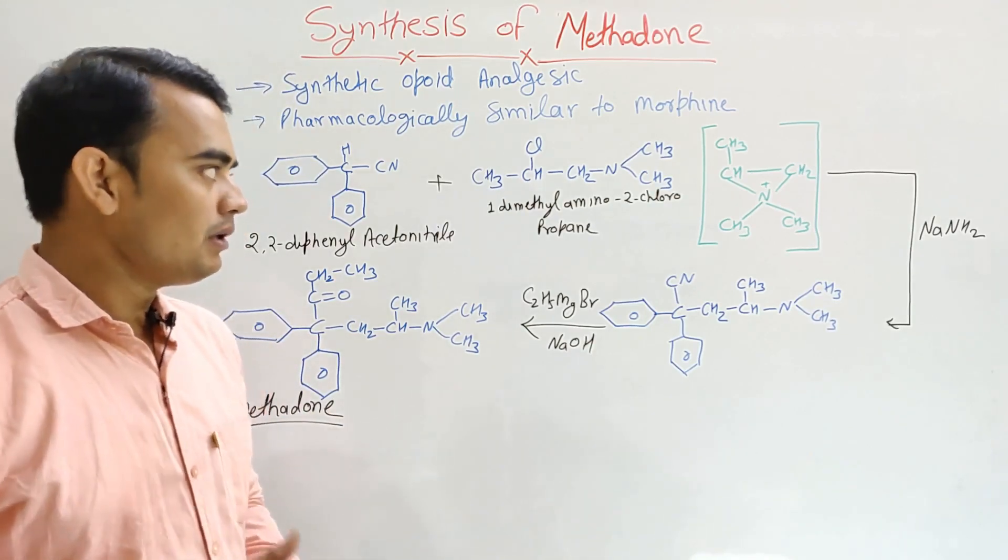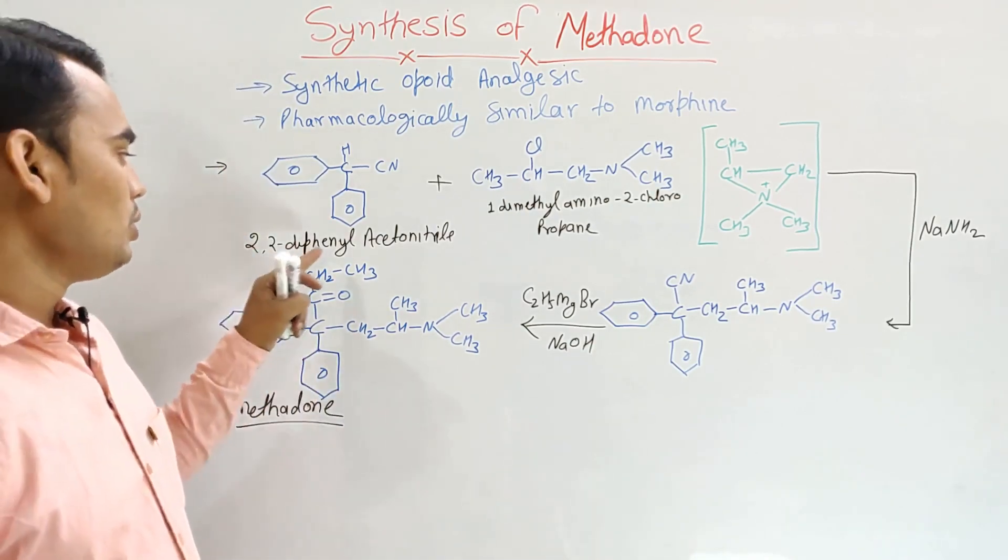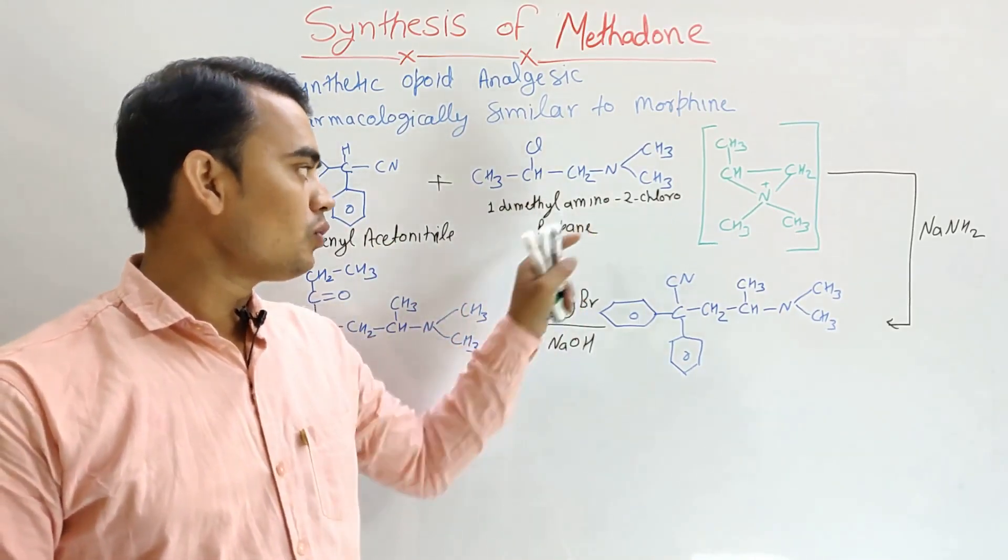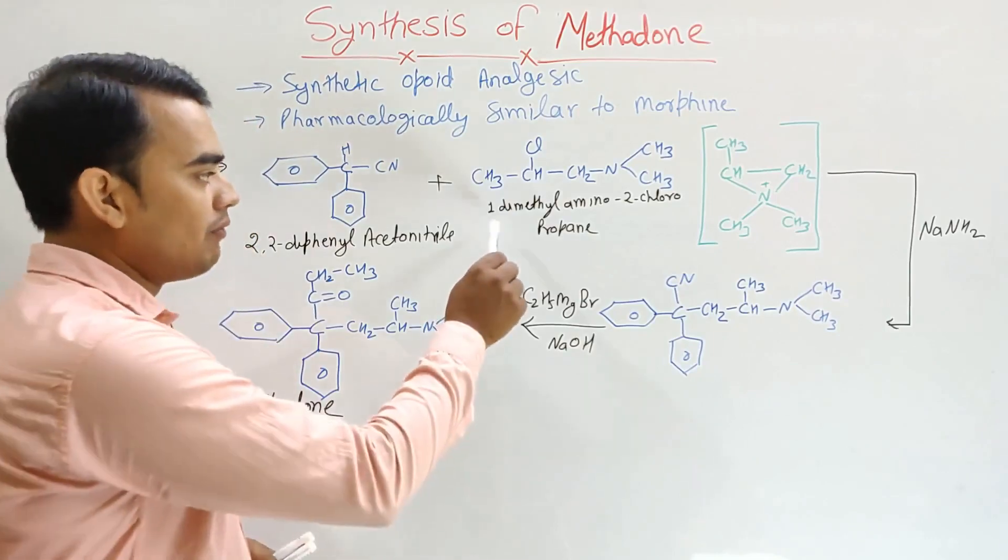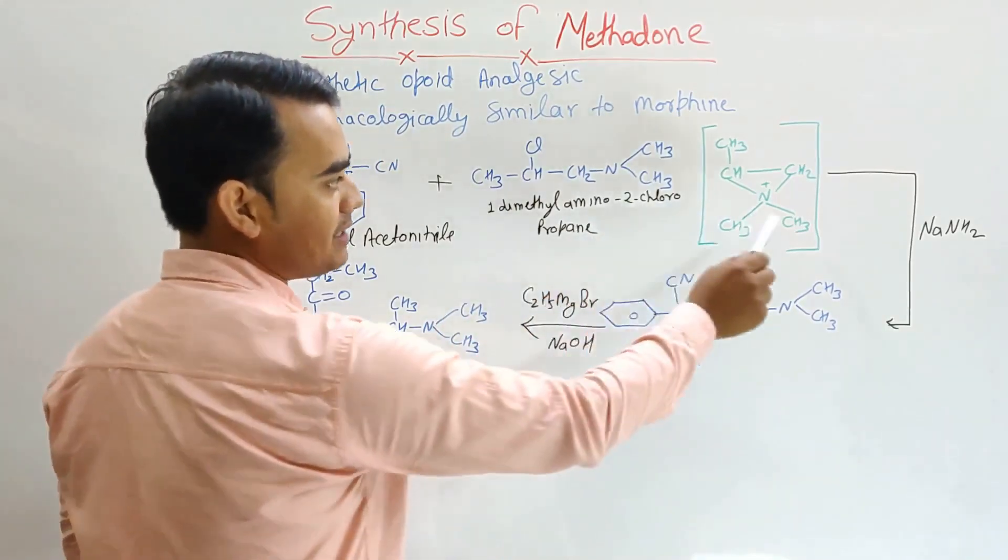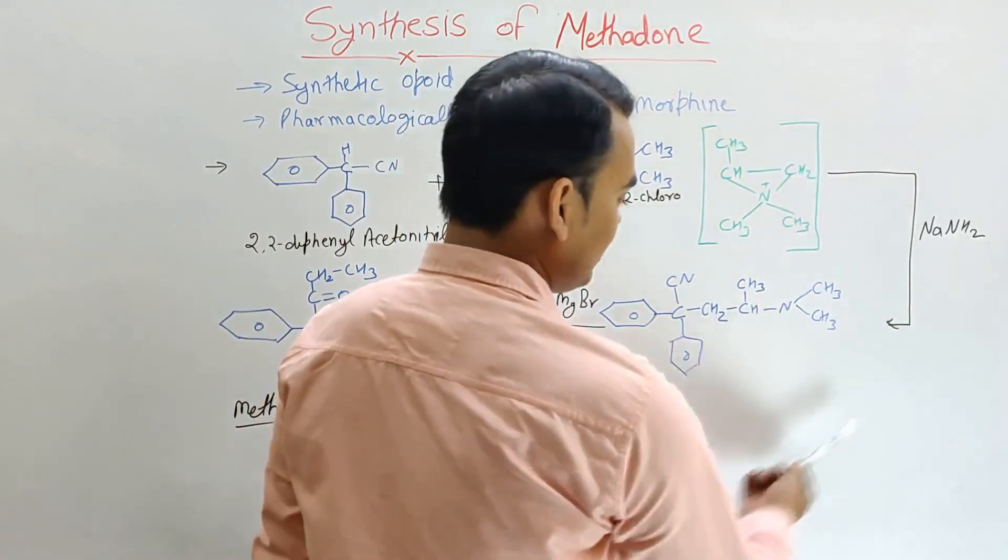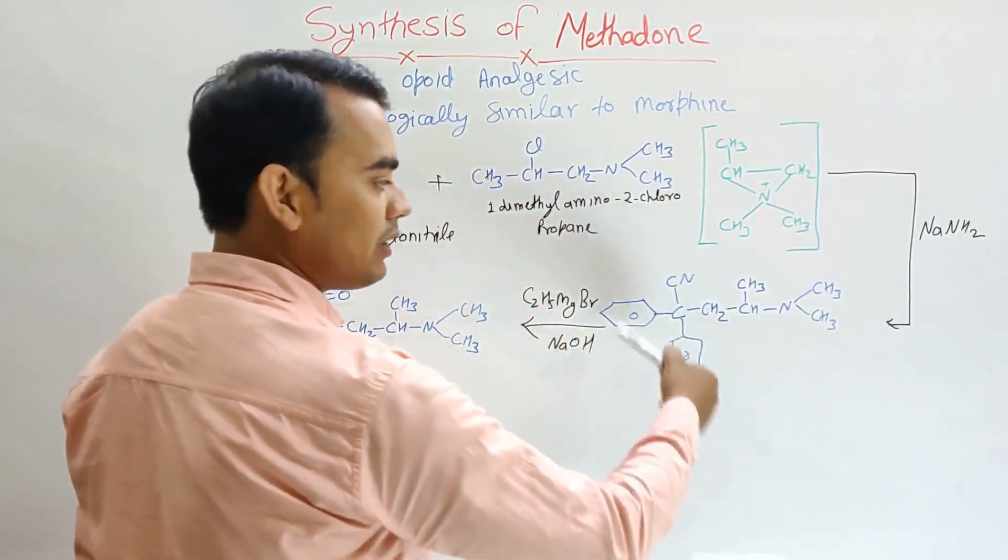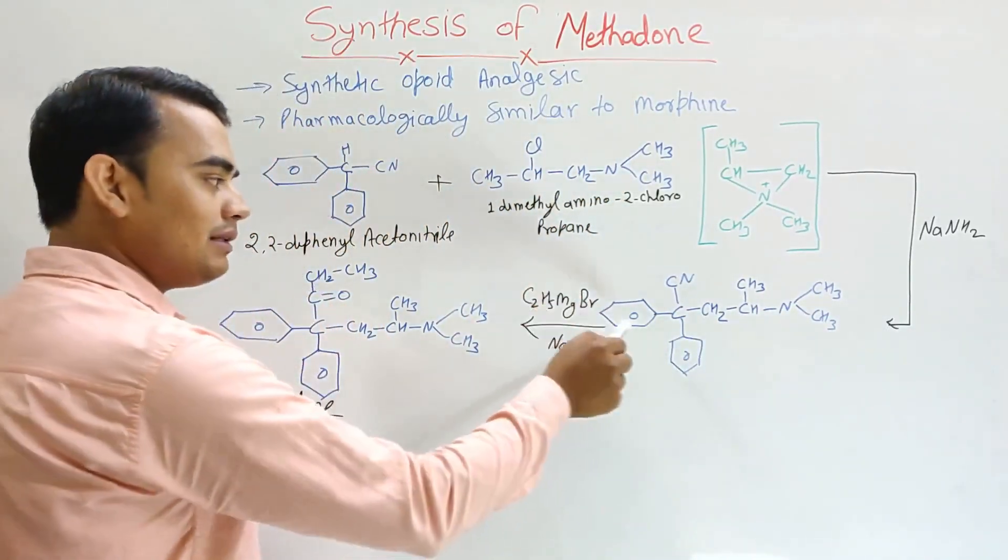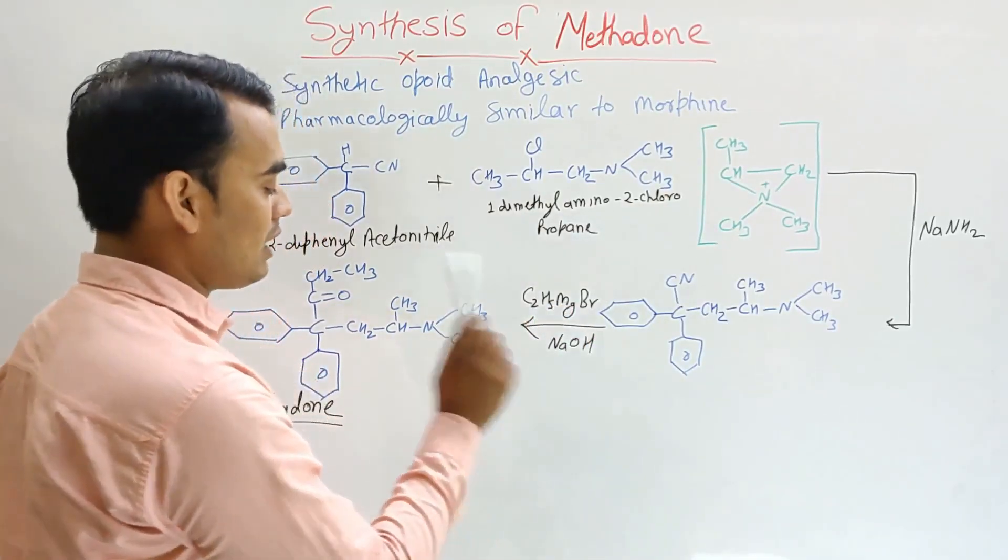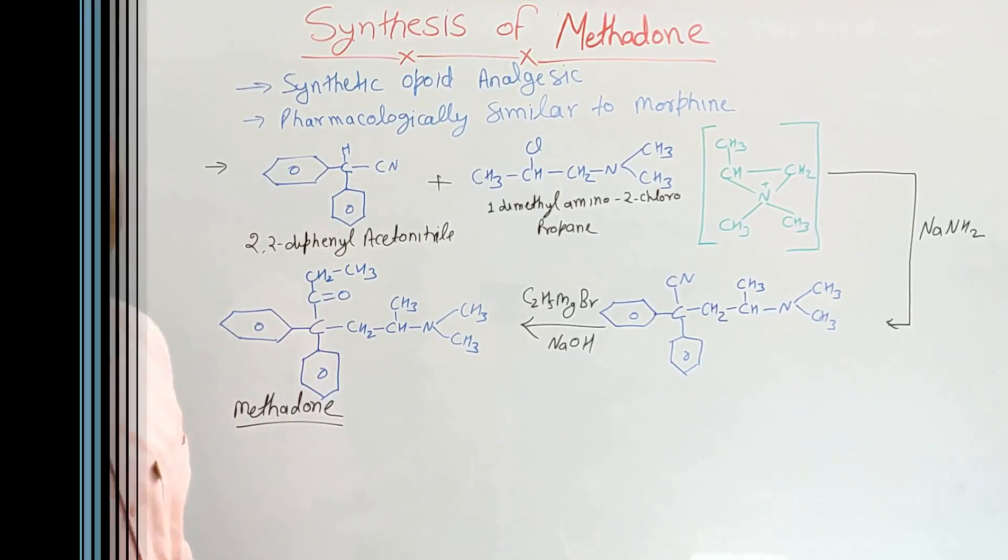It is very simple. What happened, 2,2-diphenyl-acetonitrile reacted with 1-dimethylamino-2-chloropropane. This 1-dimethylamino-2-chloropropane exists in the cyclic form, and when it reacted in the presence of sodium amide, then it forms a new intermediate when all get attached. And when this intermediate reacted with ethyl magnesium bromide in the presence of soda lime, then it forms the methadone.